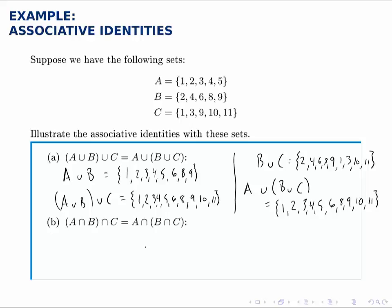For part B, we do something very similar. A intersect B first: we look for what elements belong to both A and B. We notice the 2 is in both of them and the 4 is in both of them, but that's it. Then if we take the intersection of that answer with C, we'll look for what of 2 and 4 is listed in C. Notice neither one of them is, so that's the empty set.